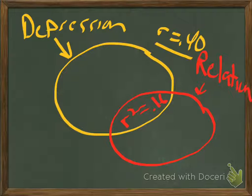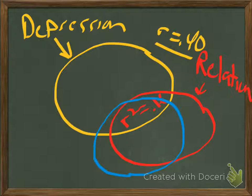Now let's add in alcohol — how much one drinks. The relationship between relationship woes and alcohol is really strong. People going through problems in their relationships start drinking, so there's a pretty strong correlation between relationship woes and alcohol. This overlap between alcohol and relationship woes is 49%, because the correlation is 0.70 and r-squared is 49%.